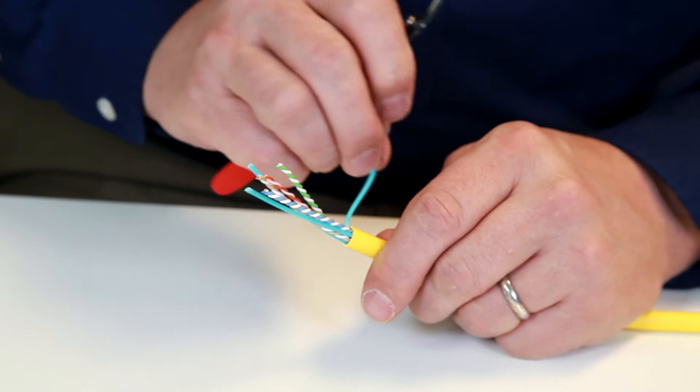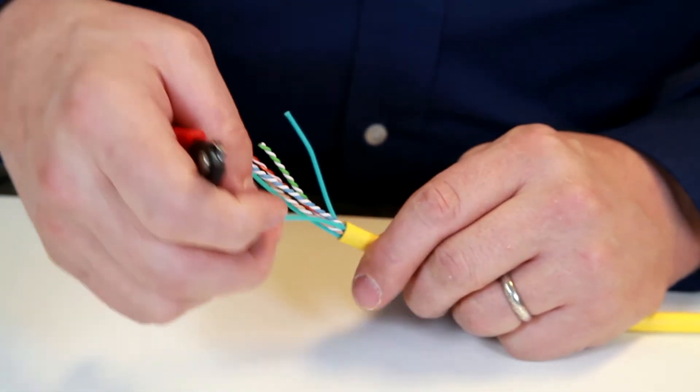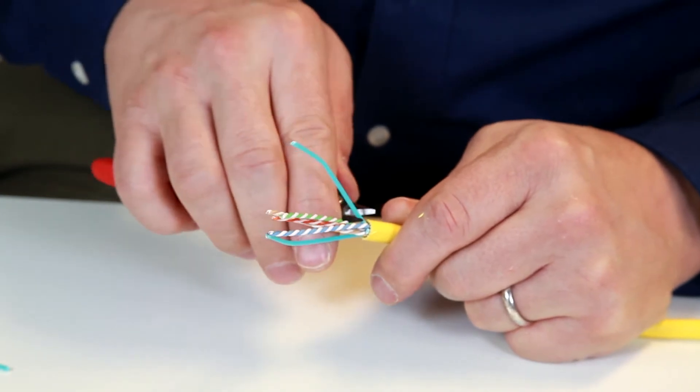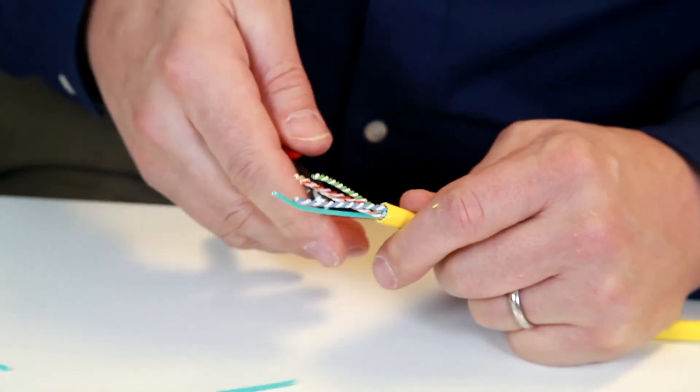Next we'll remove any non-conductive elements from the cable. Other cables may have a cross separator or clear mylar film or a rip string.